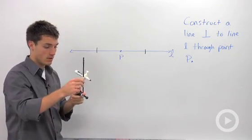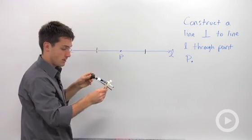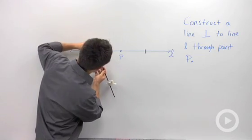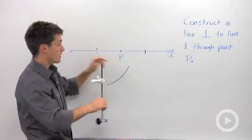So I'm going to keep my compass, and I'm going to swing an arc from one point here. I'm going to make my compass a little larger. So I'm going to swing an arc from this endpoint, swing another arc from over here,